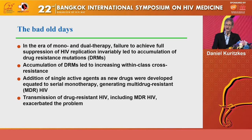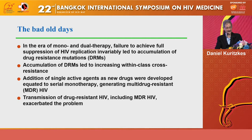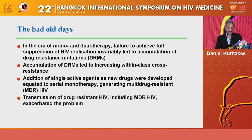But resistance has changed over the decades. In the bad old days — the era of monotherapy and dual therapy, and I mean inappropriate dual therapy, not to be confused with the new era of appropriate dual therapy such as dolutegravir-3TC or dolutegravir-rilpivirine — failure to achieve full suppression of HIV replication invariably led to the accumulation of drug resistance mutations, or DRMs. The accumulation of these DRMs led to increasing within-class cross-resistance.